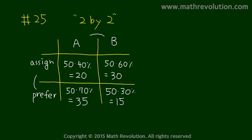Now let's look at how many people wanted to go but couldn't. 35 people wanted to go to A. But only 20 could be there. So the remaining 15 had to go to team B which they did not prefer.